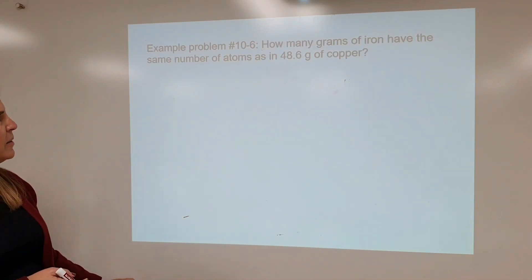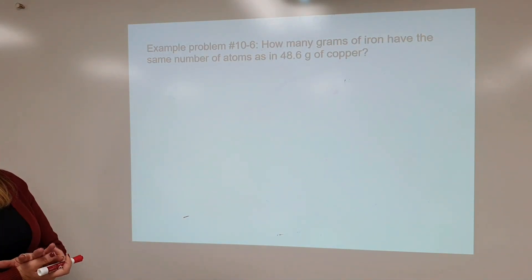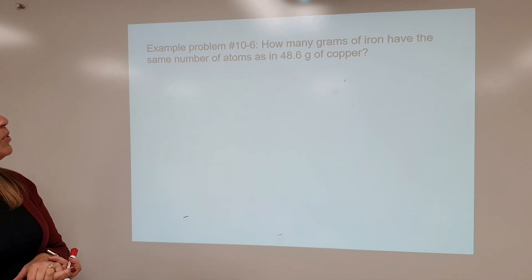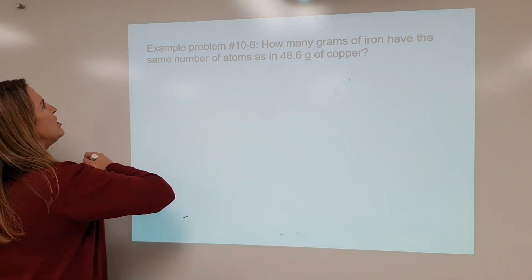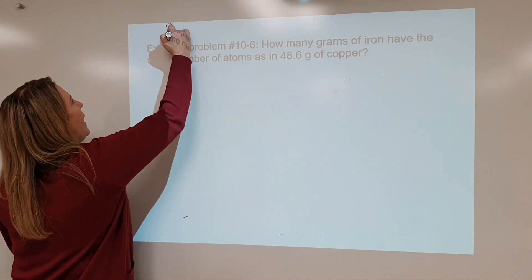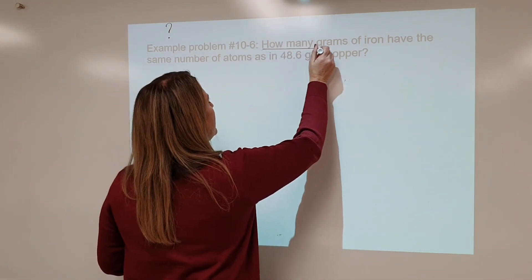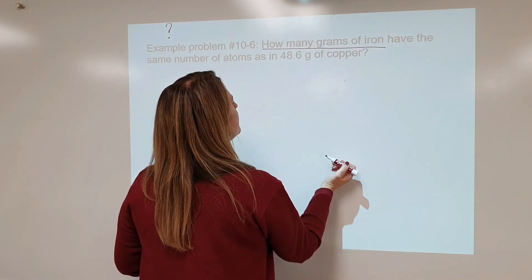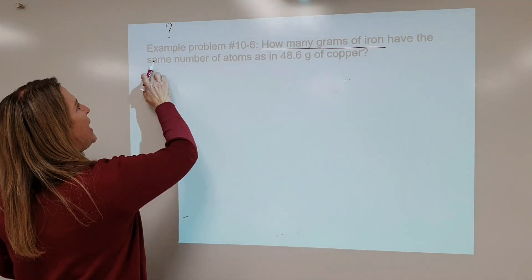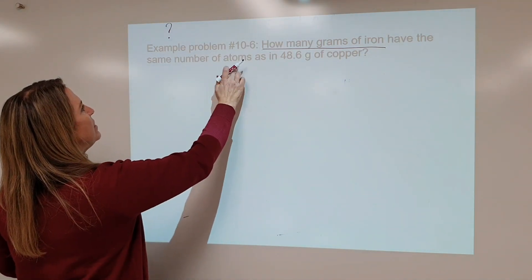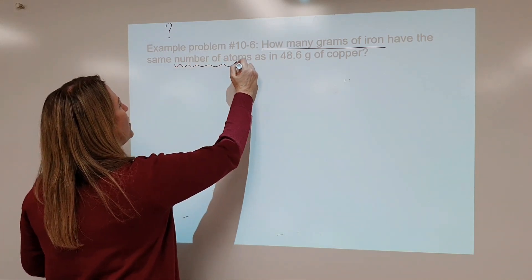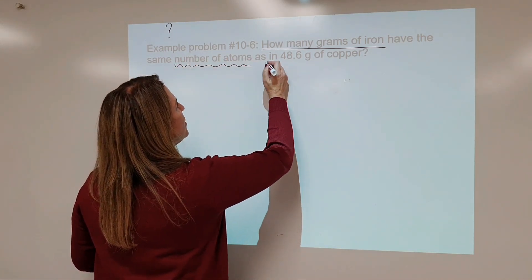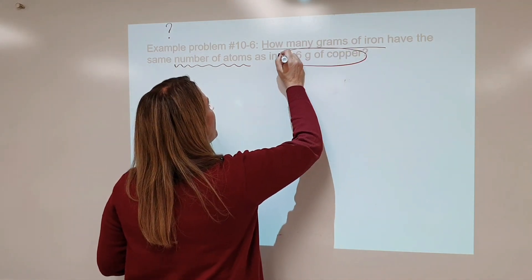Step 6, problem 10-6. How many grams of iron have the same number of atoms as 48.6 grams of copper? Let me just write this down and underline what we're looking for: how many grams of iron have the same number of atoms as 48.6 grams of copper.